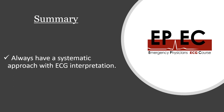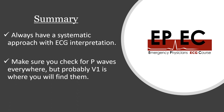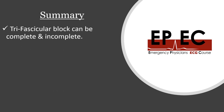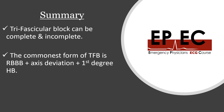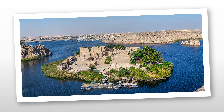In summary: always have a systematic approach with any ECG interpretation — that will help you not miss anything important. Always check for P waves everywhere in the ECG, but V1 is probably where you will find them. Trifascicular block can be complete or incomplete; the commonest form is right bundle branch block with axis deviation (right or left) plus a first degree heart block. Syncope in addition to trifascicular block is serious — that is a cardiology referral for a possible pacemaker insertion.